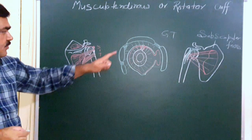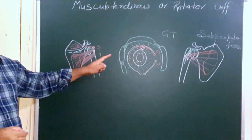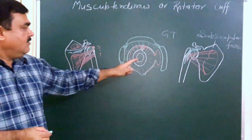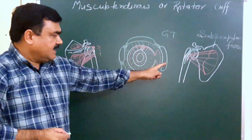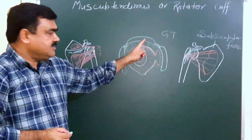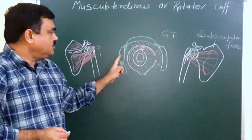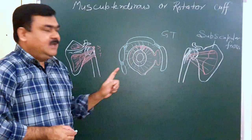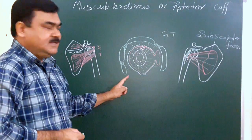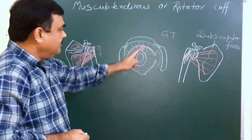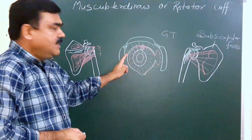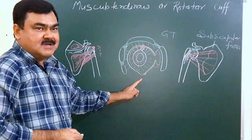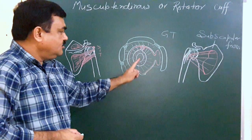So these four muscles support and strengthen the joint from the anterior aspect, superior aspect, and posterior aspect. In the inferior aspect there is no such arrangement.